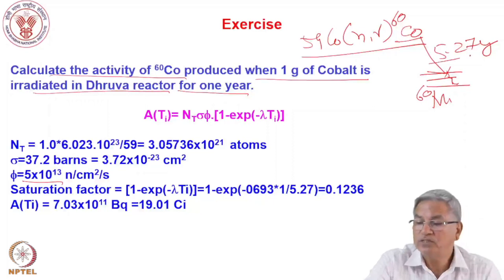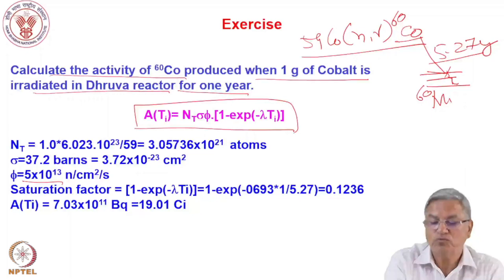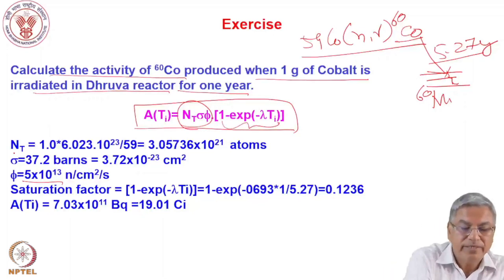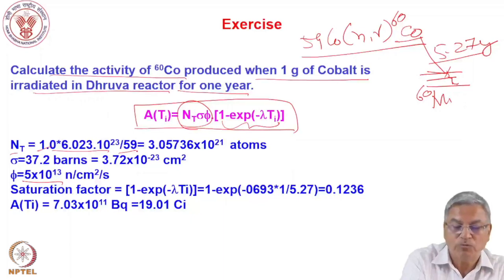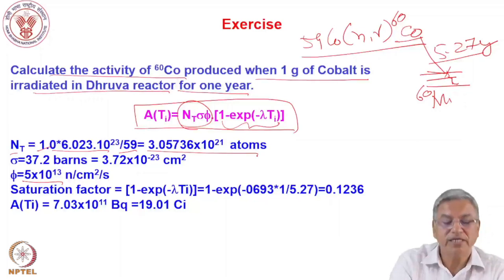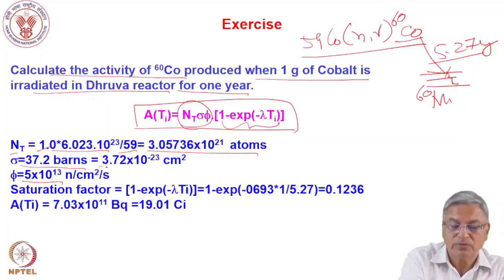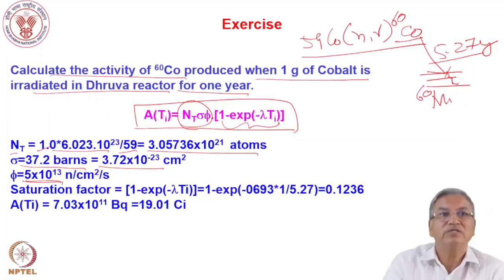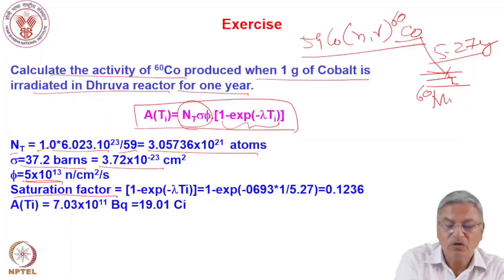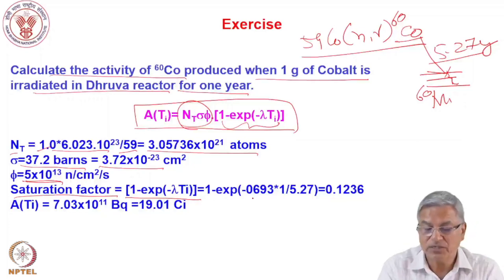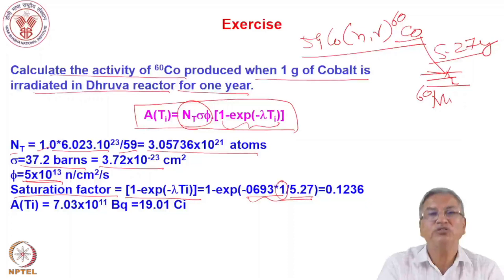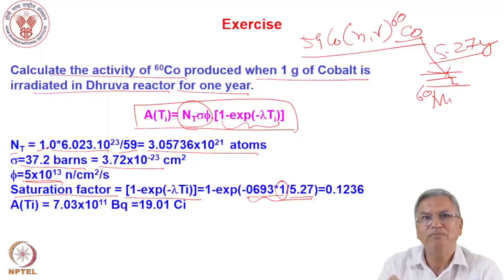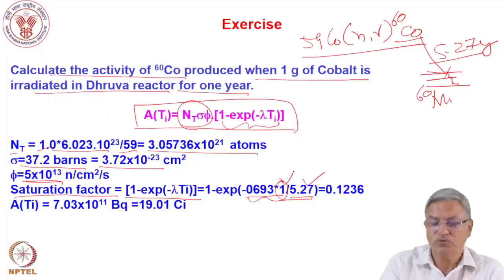The problem: 1 gram of cobalt is irradiated in the Dhruva reactor with a flux of 5×10^13 neutrons/cm²/s for a time of irradiation of 1 year. Half-life of Co-60 is 5.27 years. We use the equation A = N_t σ φ S. N_t = (1 × 6.022×10^23)/59 atoms. σ = 37.2 barns = 37.2×10^−24 cm². Flux = 5×10^13. The saturation factor is 1 − e^(−0.693×1/5.27) = 0.1236. Multiplying all factors gives an activity at end of irradiation of 7.03×10^11 Bq, or about 19 Curie.